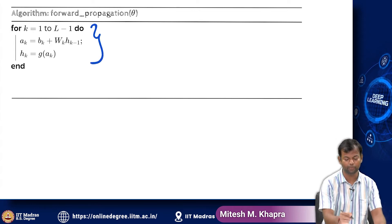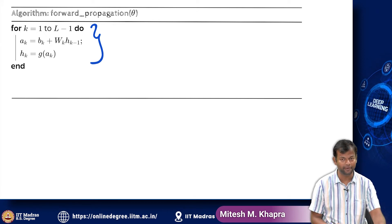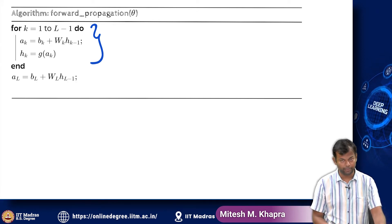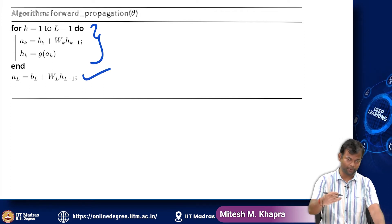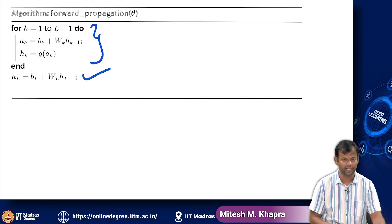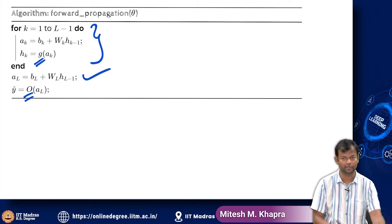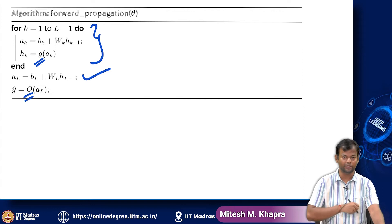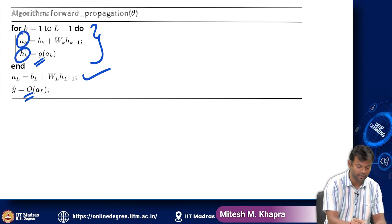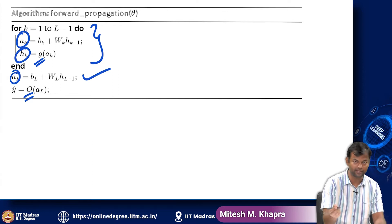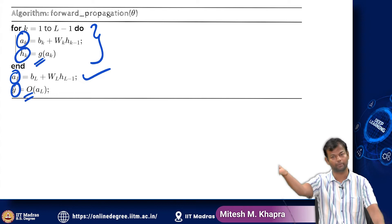What happens to the L-th layer? There you first compute aL. The output layer is put outside the loop because for the output layer you need to use a special function — you do not use the same g function. So now you have computed the activations and pre-activations for all the layers, including the output layer, and then you have computed the output y-hat. This is all you need to compute the loss.